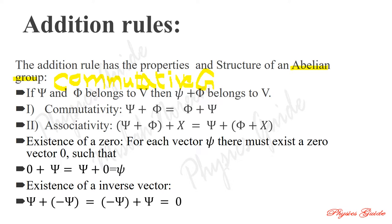In mathematics, a group is a set and an operation that combines any two elements of the set to produce a third element that also belongs to the set. If we have two elements, we can combine them to get a third element which belongs to the group.